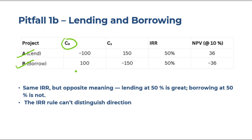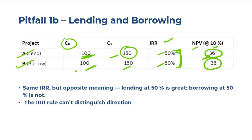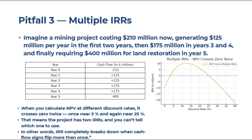Pitfall three: lending versus borrowing. If you lend $100 and receive $150 after one year, IRR is 50%. If you borrow $100 and must pay back $150, IRR is also 50%. IRR cannot distinguish the direction. But NPV at 10% shows +$36 for lending and -$36 for borrowing — same number but opposite signs. Lending at 50% is great; borrowing at 50% is not. Always check NPV because it shows the sign.